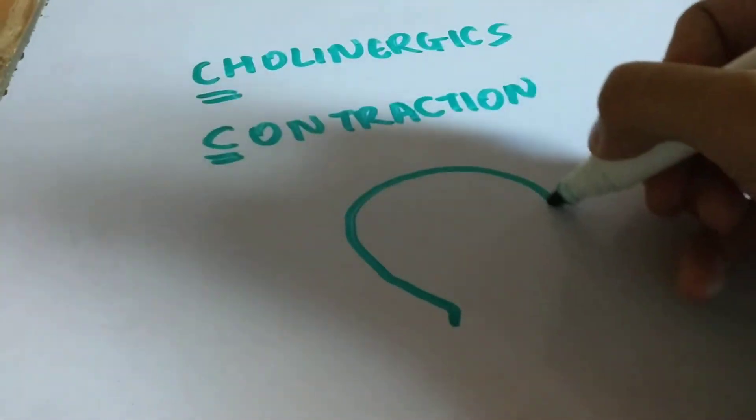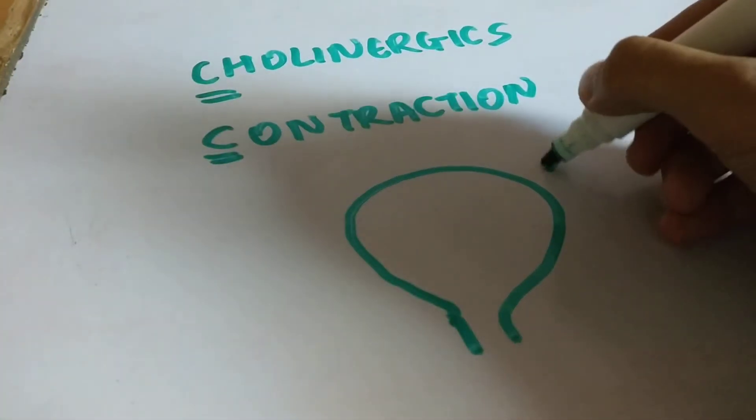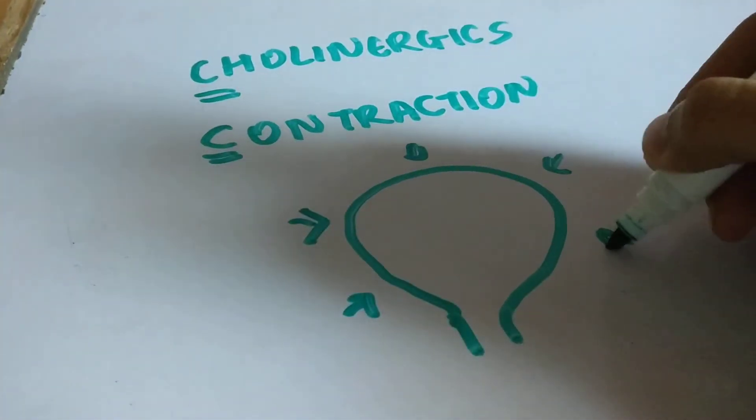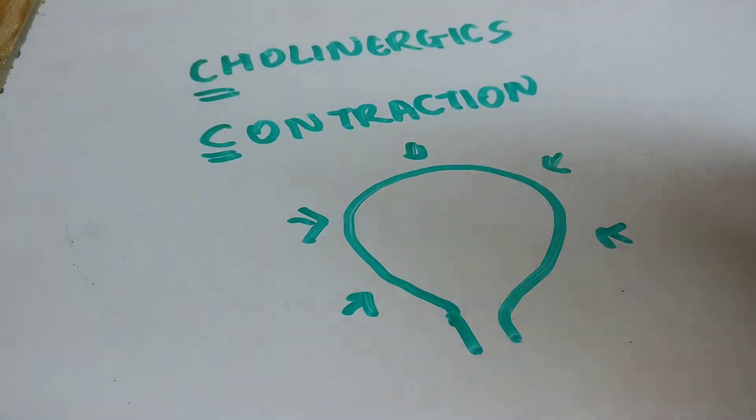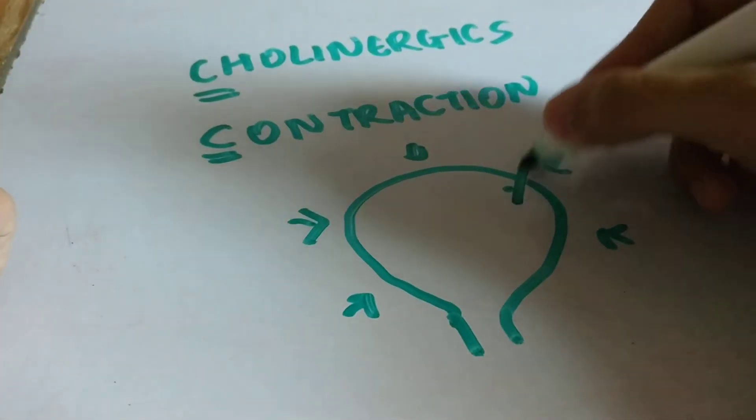In which conditions would you use cholinergic drugs? If the bladder isn't contracting like it's supposed to, you give a cholinergic to augment the contraction of the bladder.